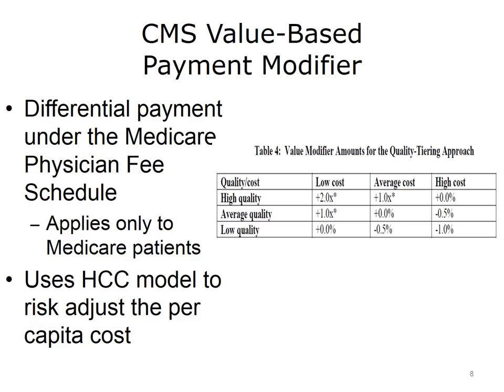Then quality measures are calculated, and the combination of cost and quality is used to assign which value modifier applies to the fee schedule for that physician or group of physicians. The excerpted Table 4 from the CMS description of the program shows that a low-cost, high-quality group could receive a 2% increase for each service performed, while a high-cost, low-quality group could have payment reduced by 1%.